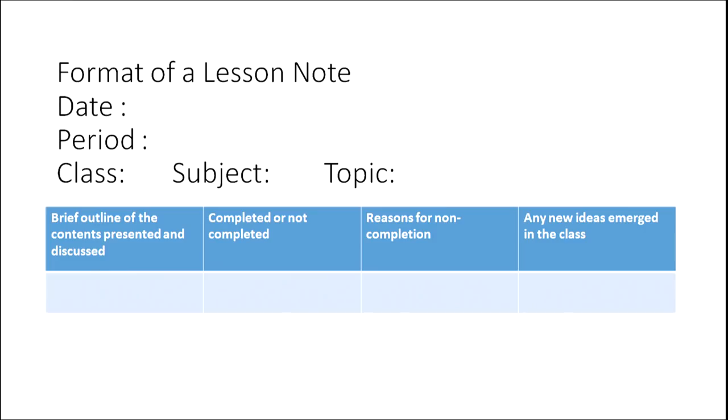This is how the format of a lesson note would be. Its columns include a brief outline of the contents presented and discussed, whether completed or not, reasons for non-completion, and any new ideas that emerged in the class. Many times there are very spontaneous but fruitful discussions in class which result in meaningful insights and ideas. A teacher can make note of those. This also acts like a reflective note where the teacher notes down the reasons she was not able to complete a particular lesson.